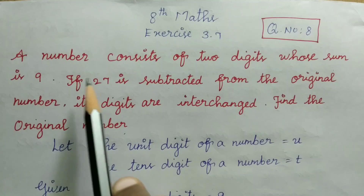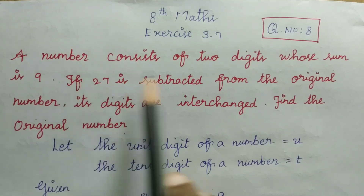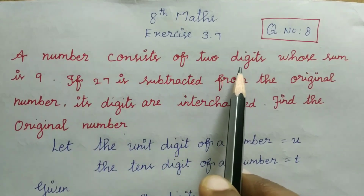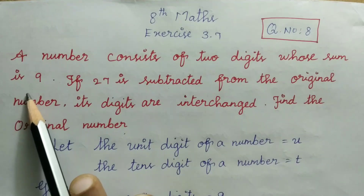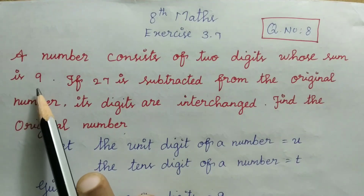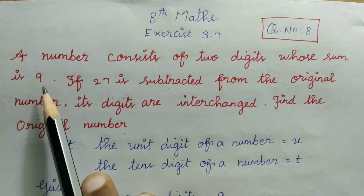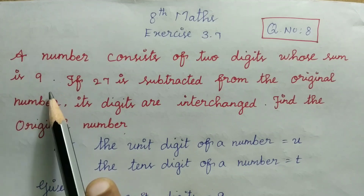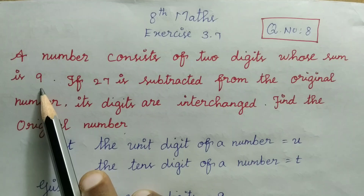Here is a number of unknown value. The unknown number is 2 digits. The sum of the 2 digits is 9. The number has a 1s place and a 10s place. The answer is 9.